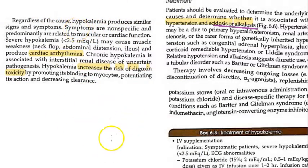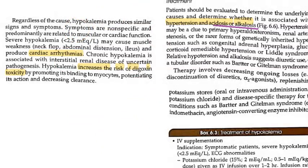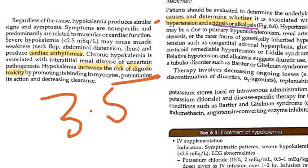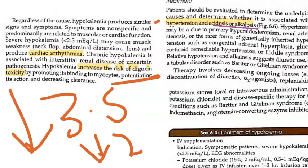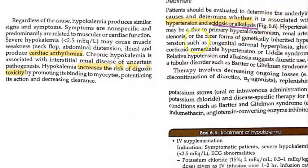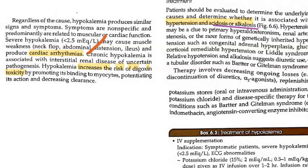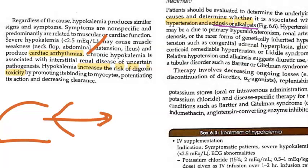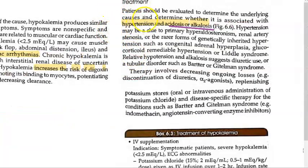Symptoms of hypokalemia are non-specific and related to muscular or cardiac function. Severe hypokalemia — potassium below 2.5 mEq/L — can cause neck flop, abdominal distension, muscle weakness, and paralytic ileus. Cardiac arrhythmias can occur. Chronic hypokalemia may be associated with renal disease. Hypokalemia increases the risk of digoxin toxicity, so caution is needed when giving digoxin to hypokalemic patients.